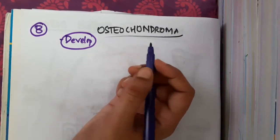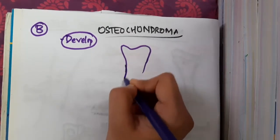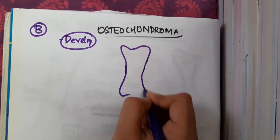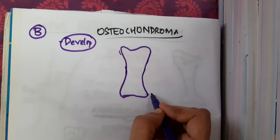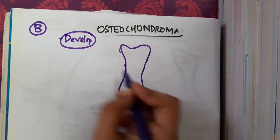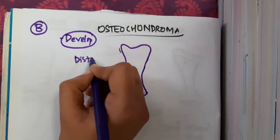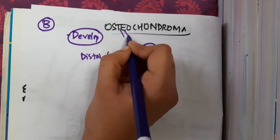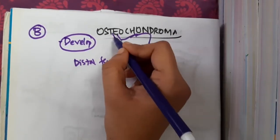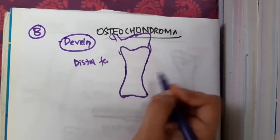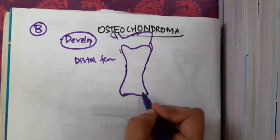Osteochondroma mainly occurs in the metaphysis, especially in the distal femur, followed by the tibia.